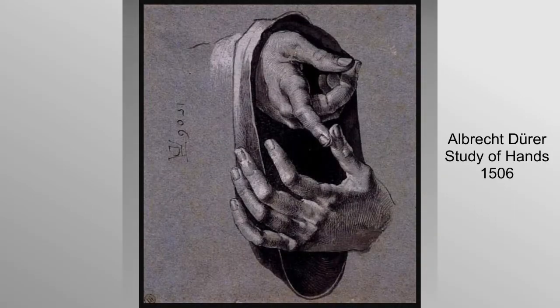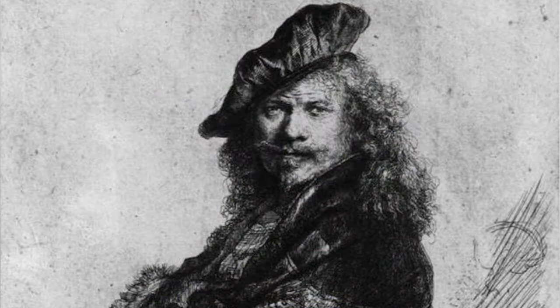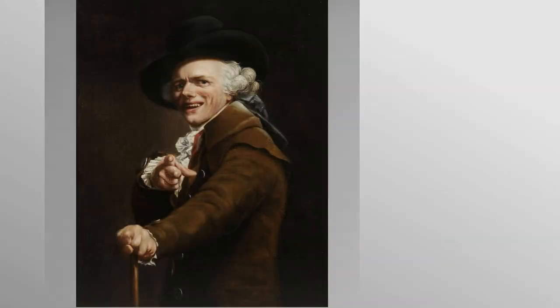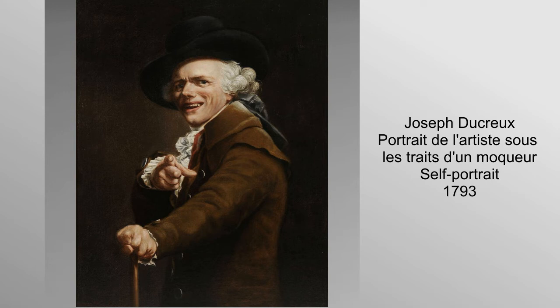Essentially, artists use Chiaroscuro to show the contrast between light and dark areas in a composition to suggest form in relation to a light source. The term Chiaroscuro originated during the European Renaissance, and artists developed the technique in various ways such as through composition, mood, and to show volume.